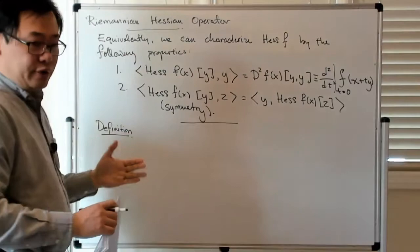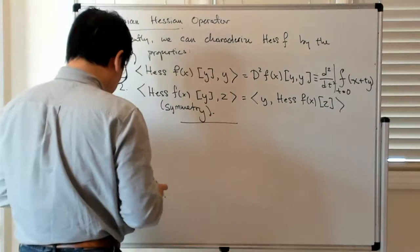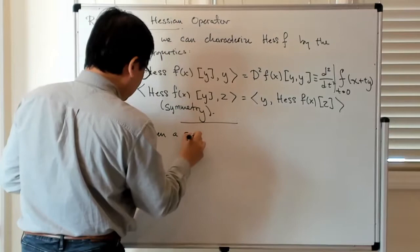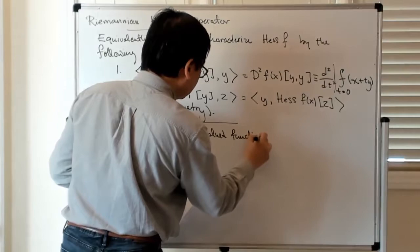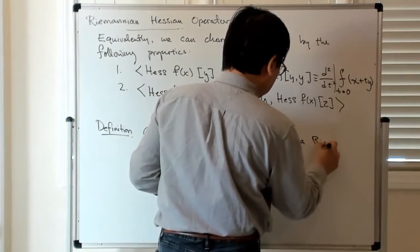And I guess I should also say that the other thing we said was that you should think of the Hessian operator as a linear operator from a vector space to a vector space. So with that in mind then if you're given a real value function F on the Riemannian manifold M